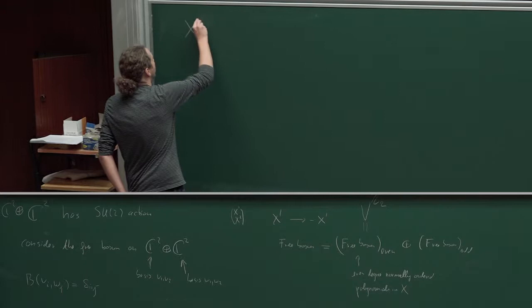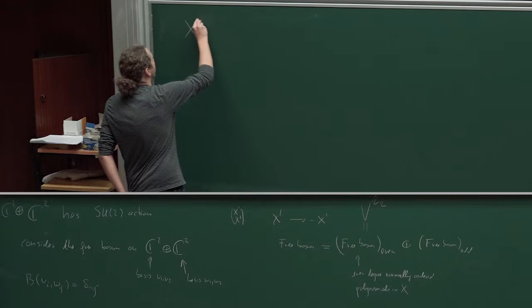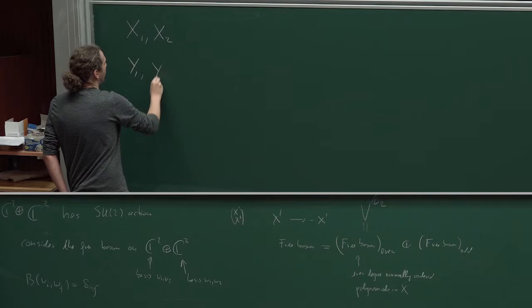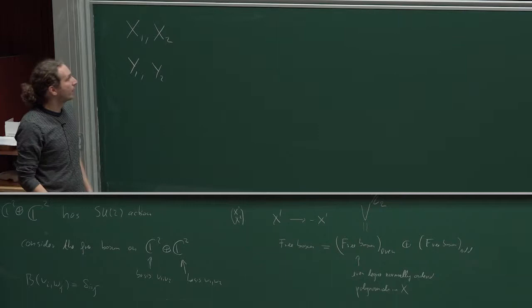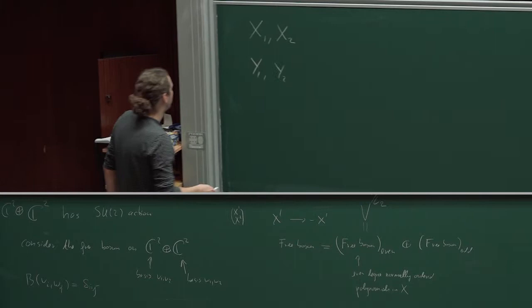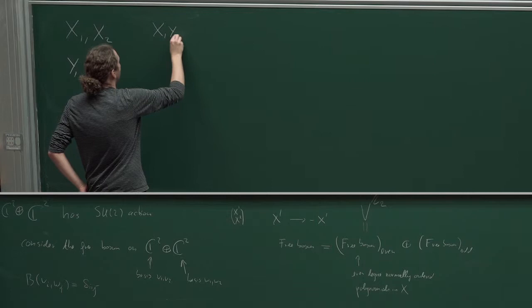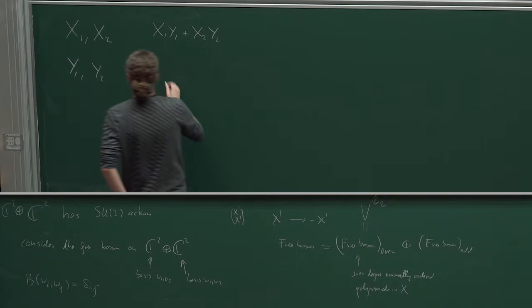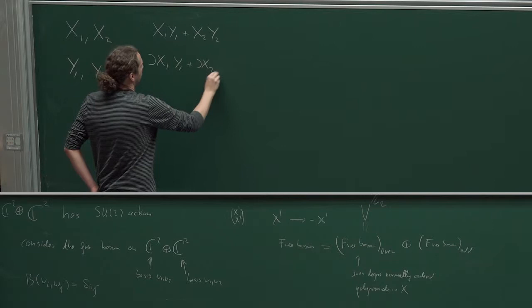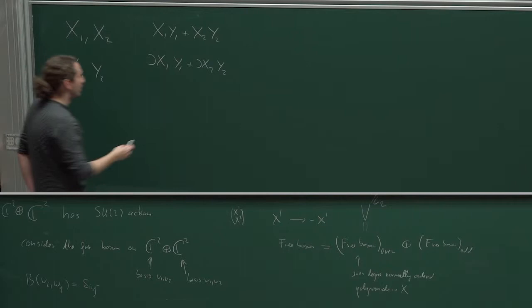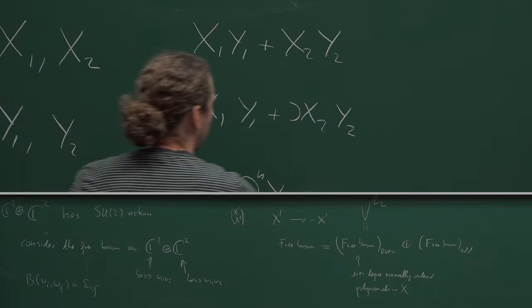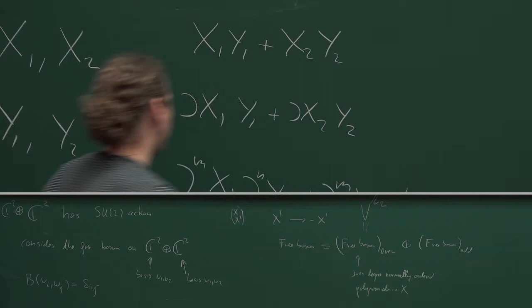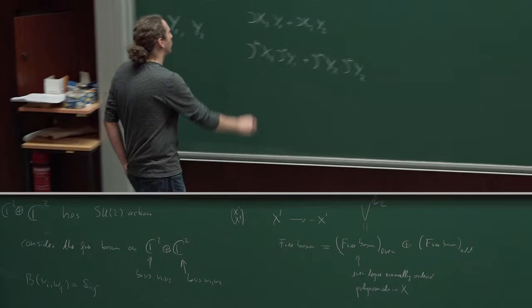Let me just write down a few invariants. We have our Heisenberg fields X1, X2, Y1, and Y2. Each of them you should think about as a column vector or a row vector on which SU(2) acts. An invariant would be just the trace — for example, X1 times Y1 plus X2 times Y2 would be invariant under SU(2). More generally, I can take a derivative of X1, for example, and that would also be invariant. I take any derivative of the X's and any derivative of the Y's. When you write products in this context, you always mean normal order.